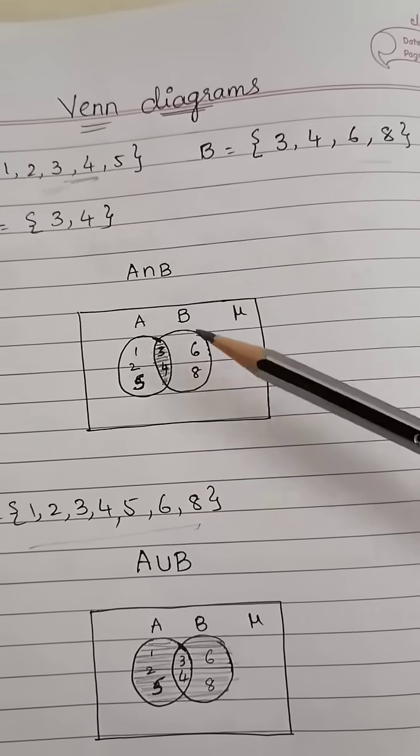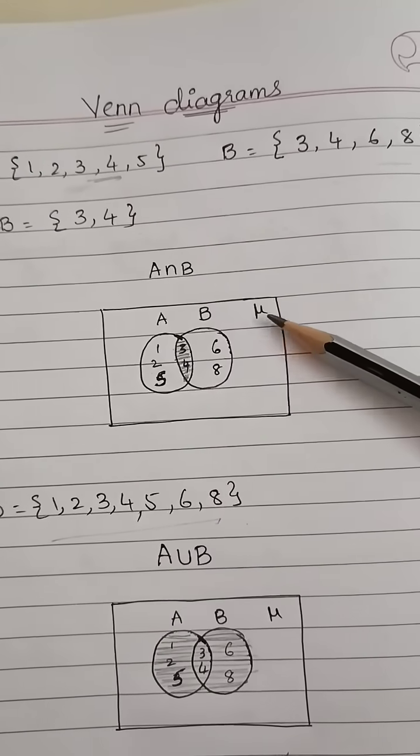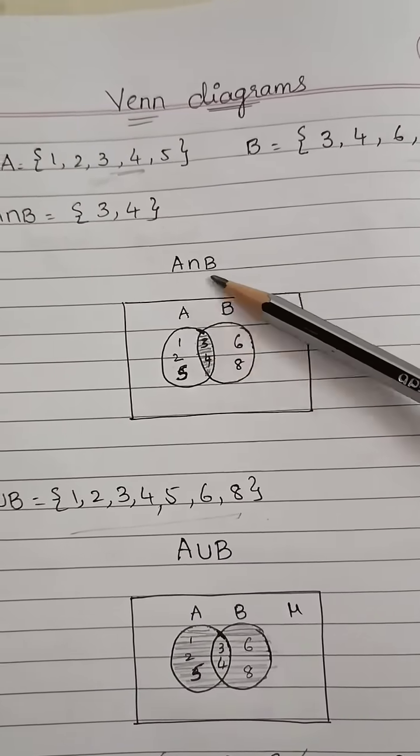Six and eight will be in the B set. This is the universal set. Shade only this intersection part.